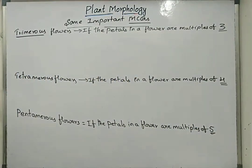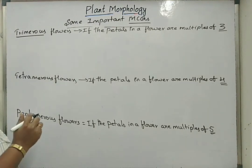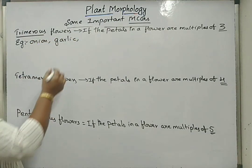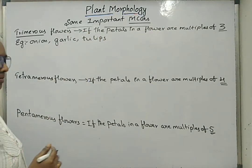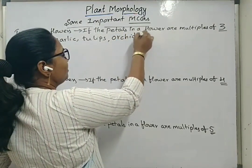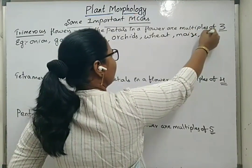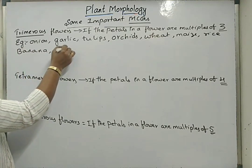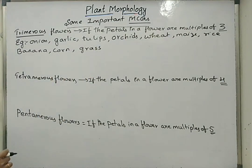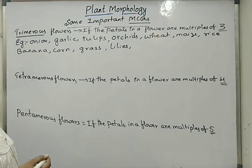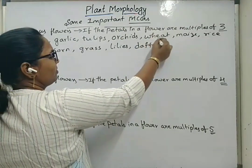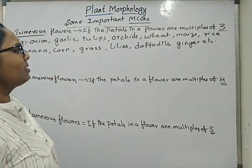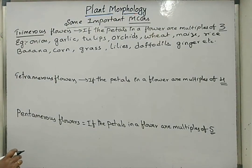Examples under trimerus or tetramerus or pentamerus types of flowers — we can write: onion, garlic, tulips, orchids, wheat, maize, rice, banana, corn, grass, lilies, daffodils, and ginger. These are some of the important examples asked under trimerus conditions.